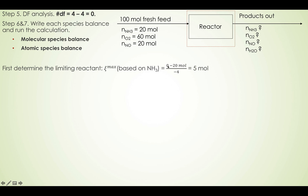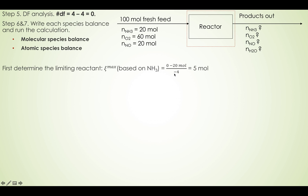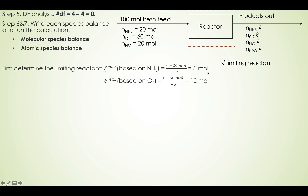Because ammonia is a reactant, its stoichiometric coefficient is negative, so dividing by negative four gives ξ_max = 5 moles. Do the same for oxygen: oxygen is a reactant, assume it goes to completion to zero. The input is 60 moles divided by negative five (since oxygen is a reactant, coefficient is negative), which gives ξ_max = 12. Since 5 is less than 12, ammonia is the limiting reactant.